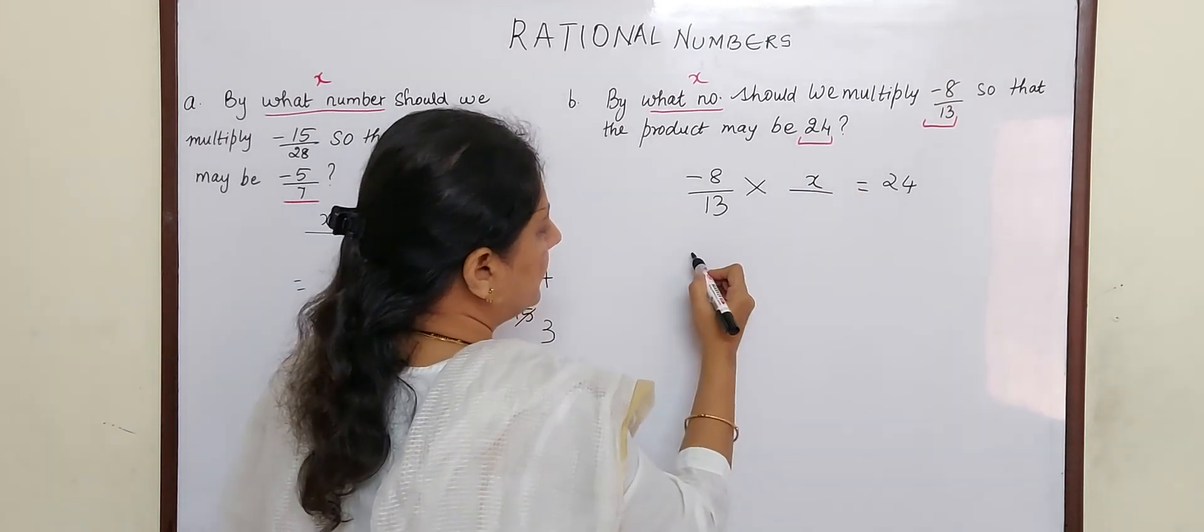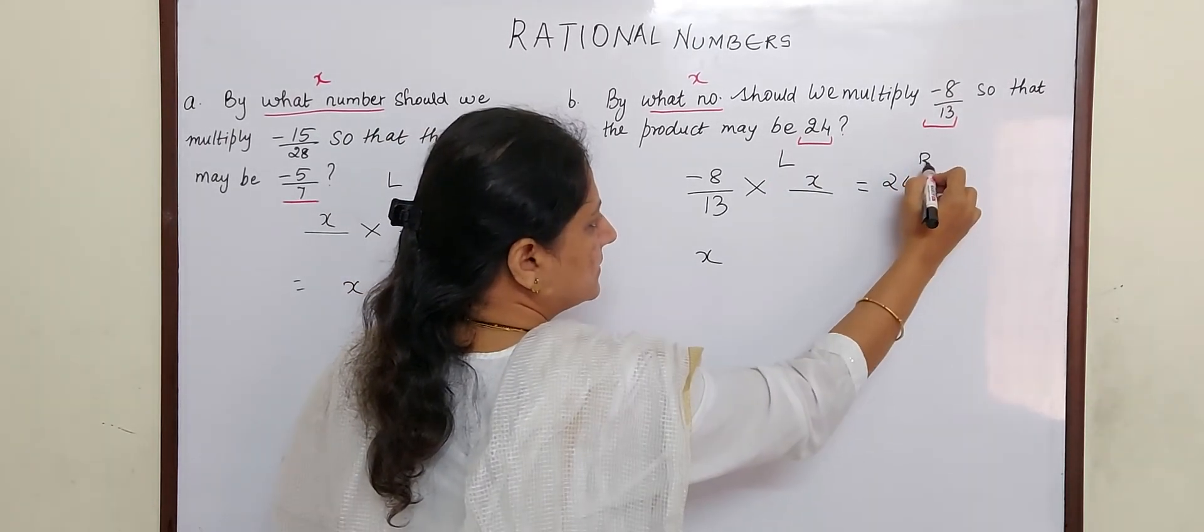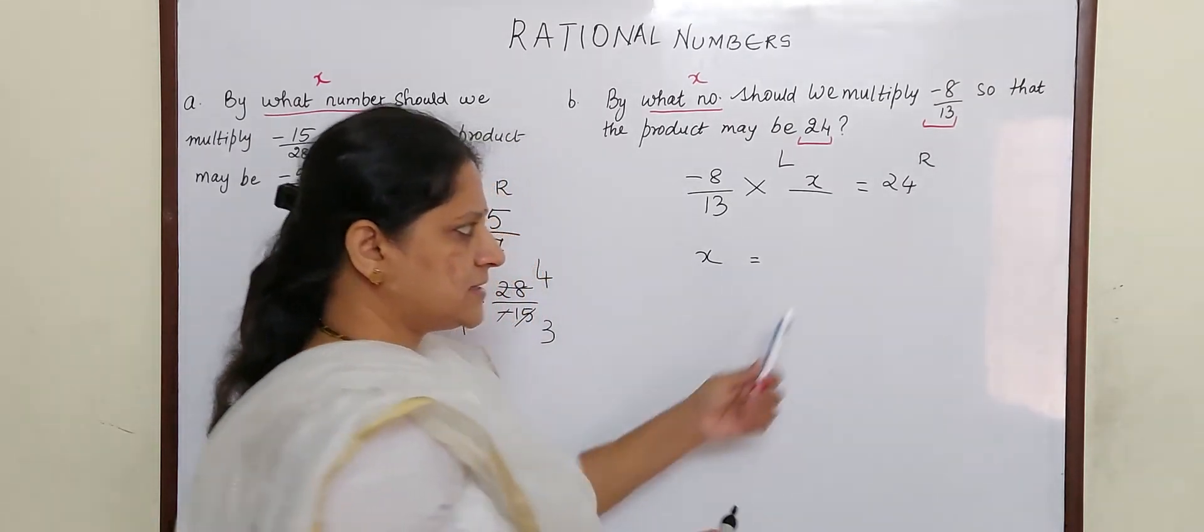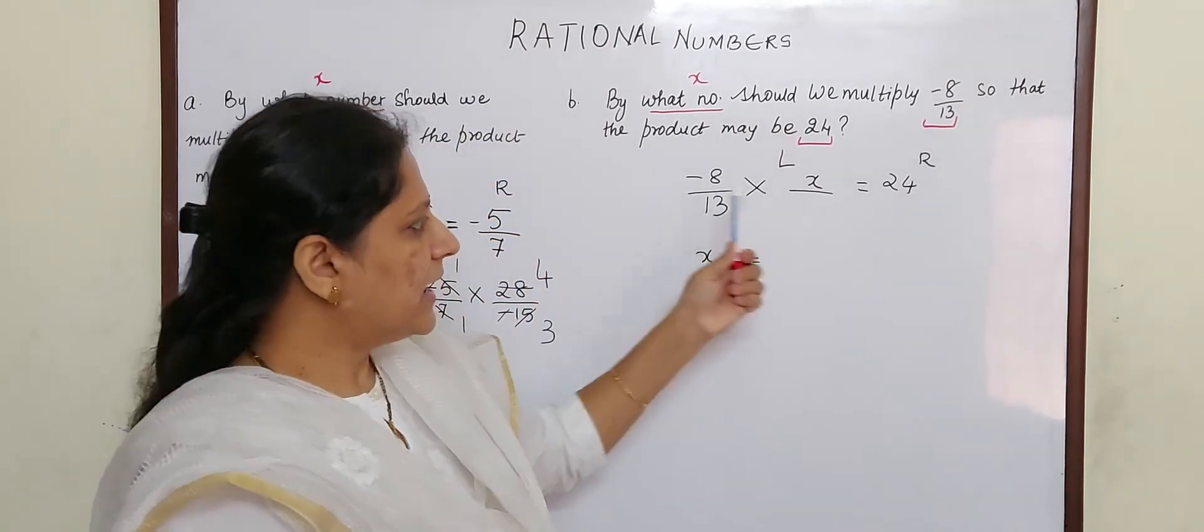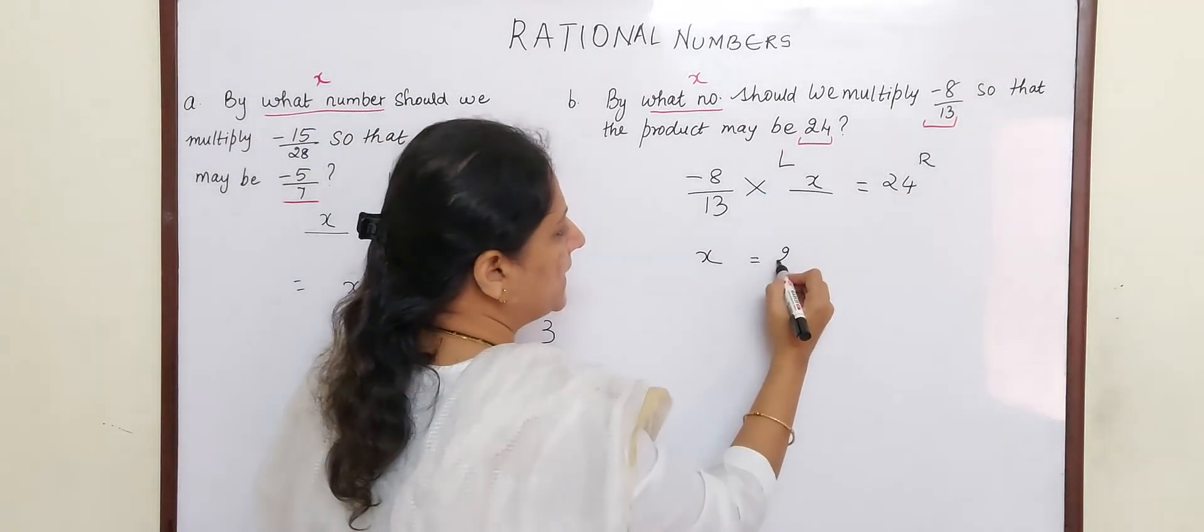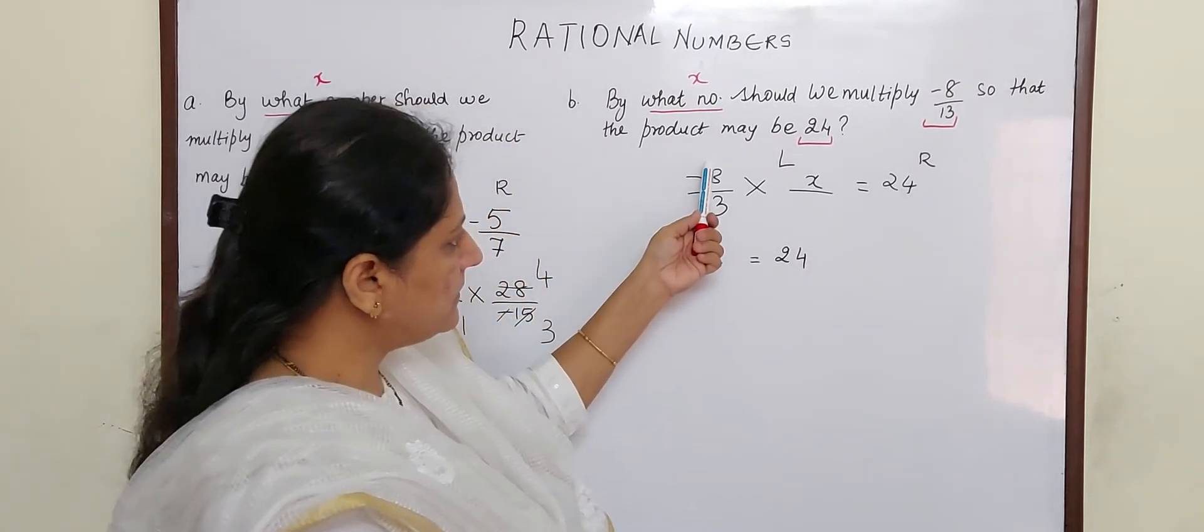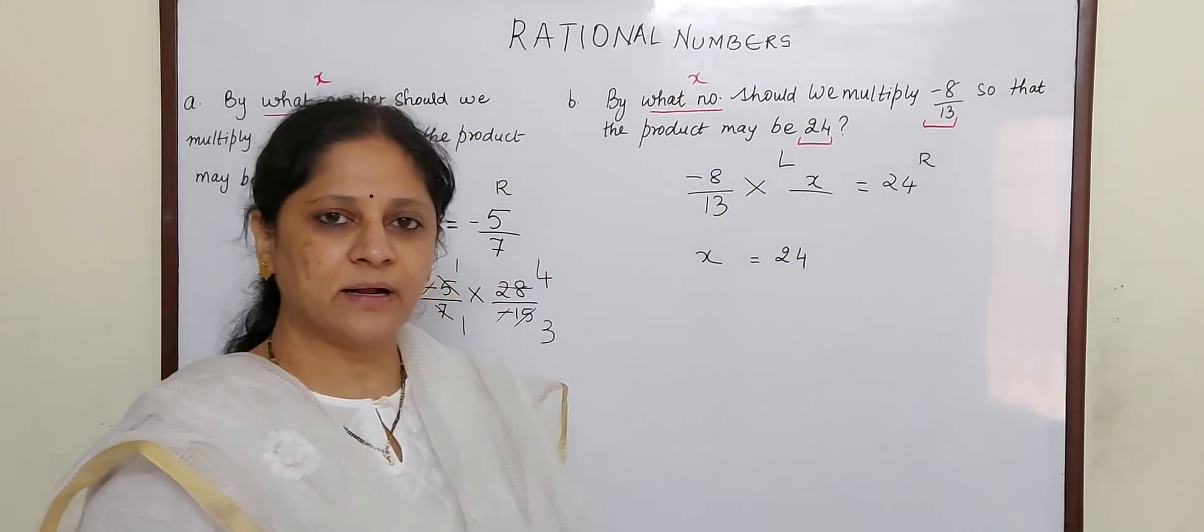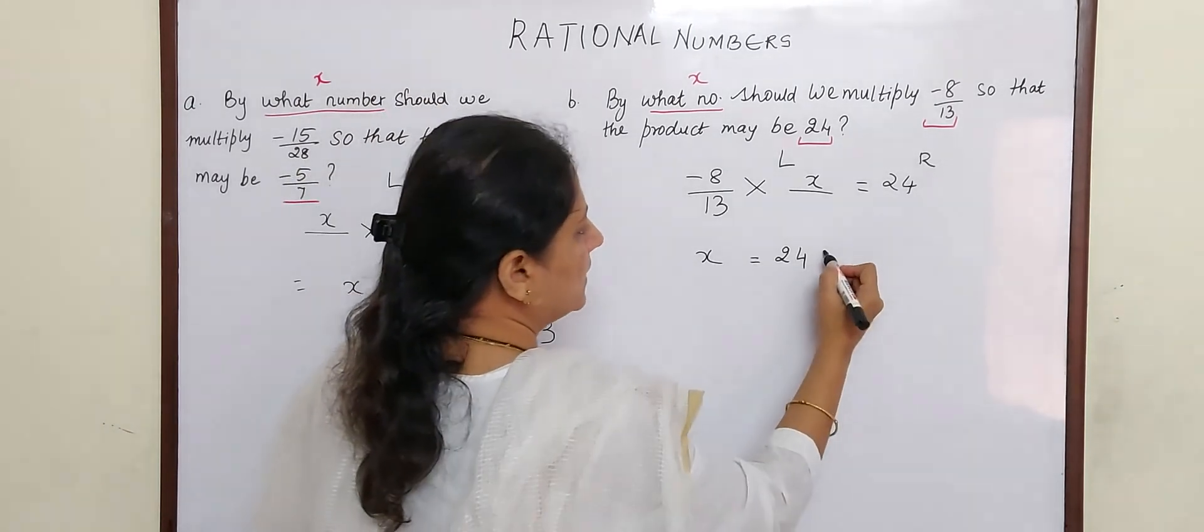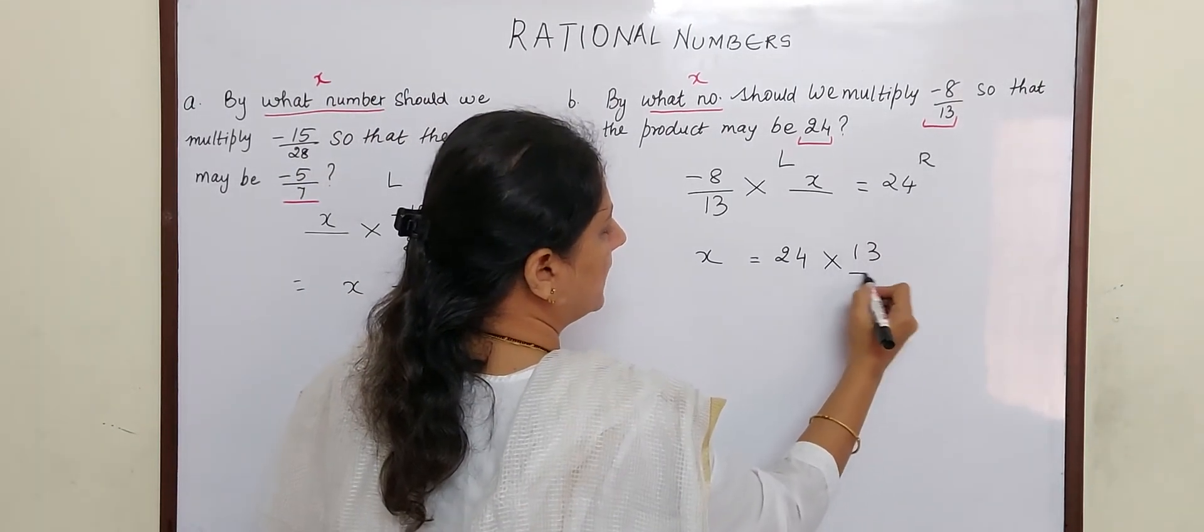So let x be in the left hand side as it is, and what is there in the right hand side children? 24. And when you will bring -8/13 from left hand side to right hand side, what will it become? Reciprocal - into 13 by -8.